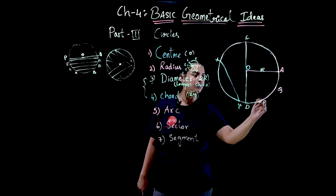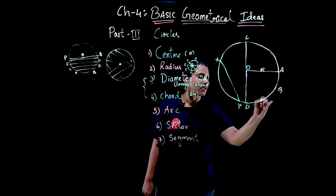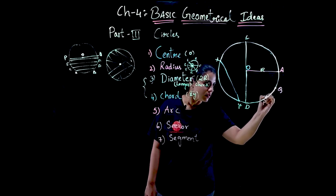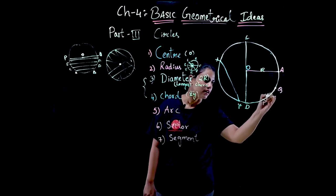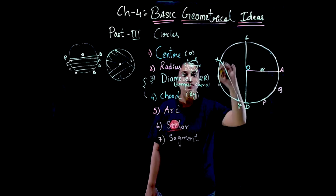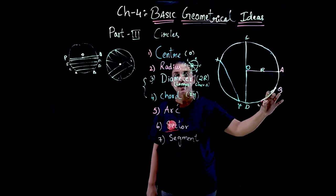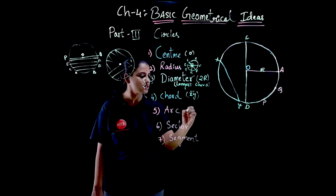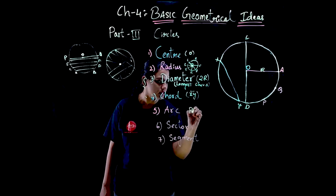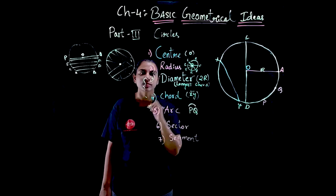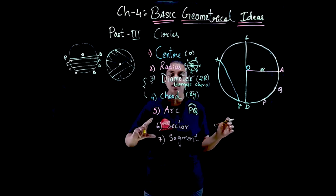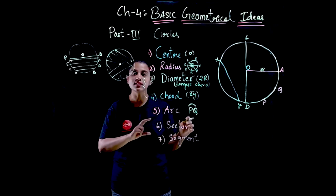Now let us see what an arc is. In this figure I have shown P and Q in pink. This curve is called the arc. Any part of a circle — any minor or major part of a circle — is called an arc. It is represented as arc PQ with a curve symbol.